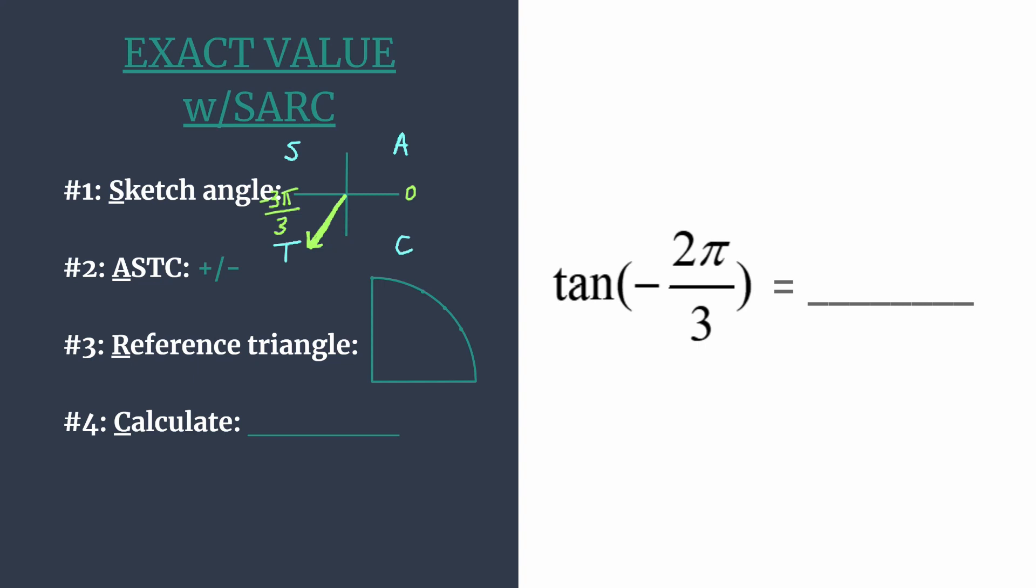This tells you which trig functions should be positive in each quadrant. They're all positive in quadrant 1. Sine and its reciprocal cosecant are the only ones positive in quadrant 2—all the rest are negative. Our angle is in quadrant 3, and the T tells us that tangent and cotangent are going to be the positive trig ratios in this quadrant.